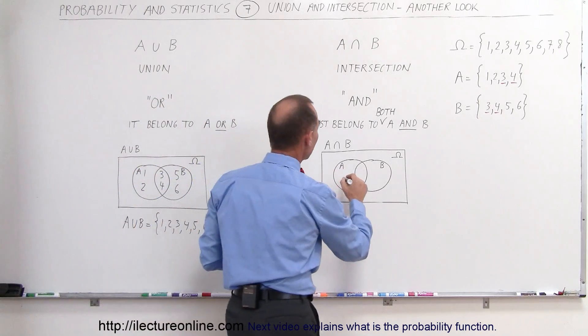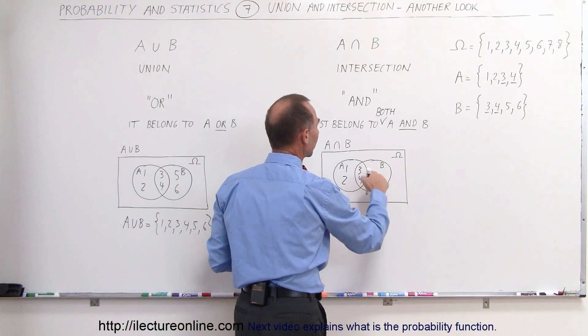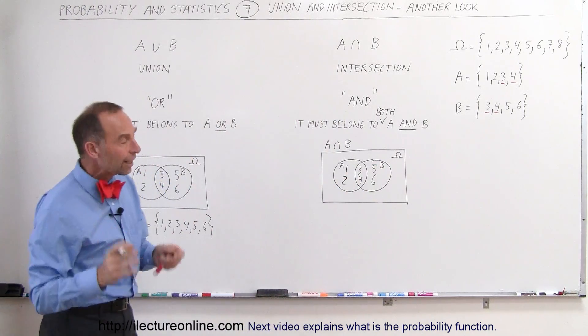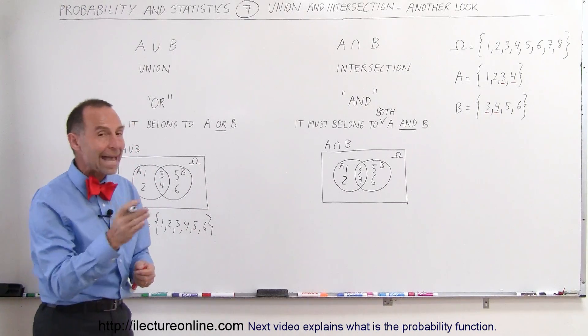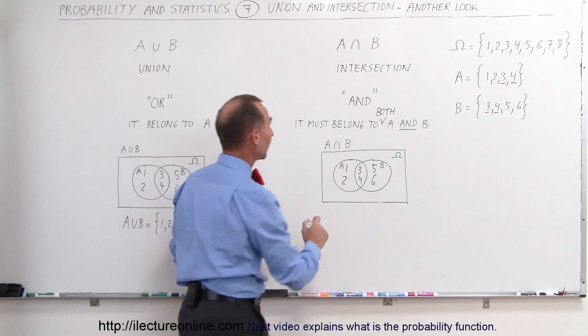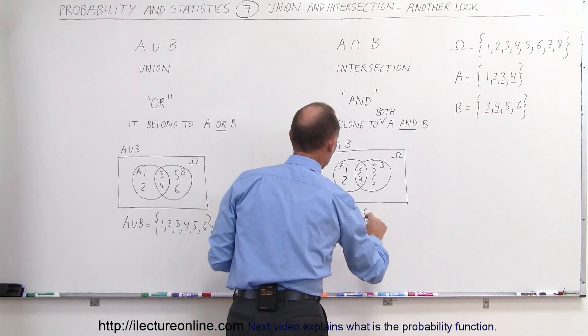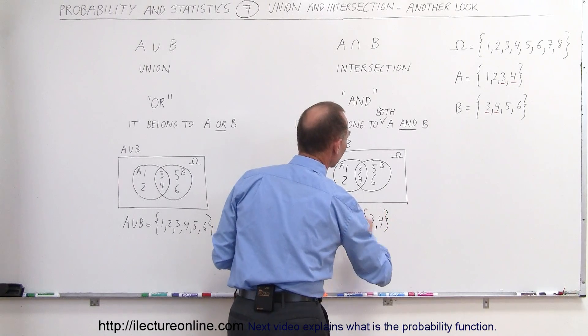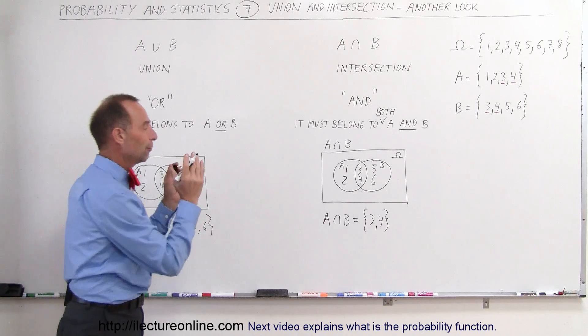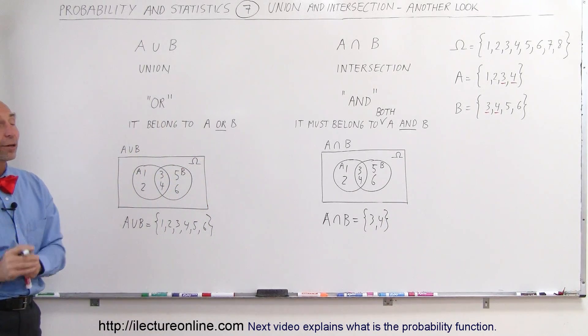It must belong to both A and B to be part of the intersection. So here again, for A, we have 1 and 2, 3 and 4. We know 3 and 4 are common to B, and then we have 5 and 6 in B that's not common to A. So what are the elements that belong to both A and B? Well, it's only those two that are in common. So therefore, we can think of A intersection B is equal to the two elements, 3 and 4, because only 3 and 4 belong to both A and to B, and therefore, they're part of that intersection. And hopefully, that helps clear it up for you.